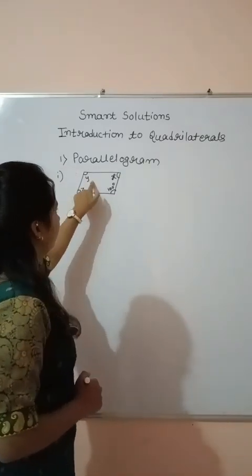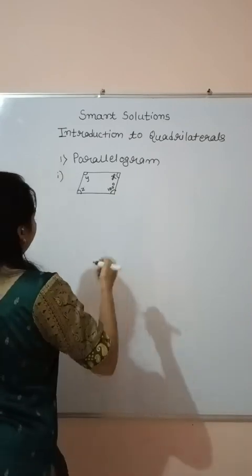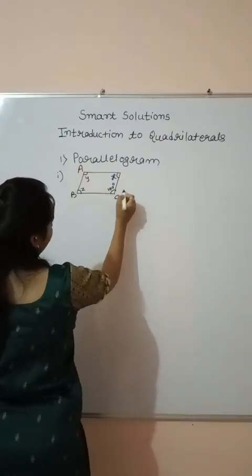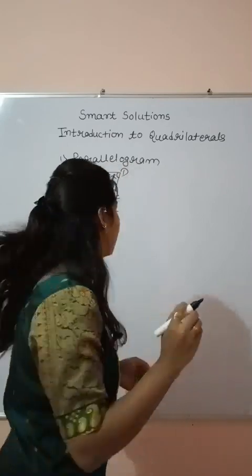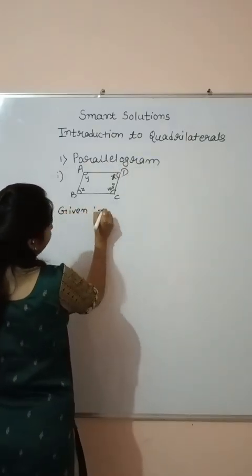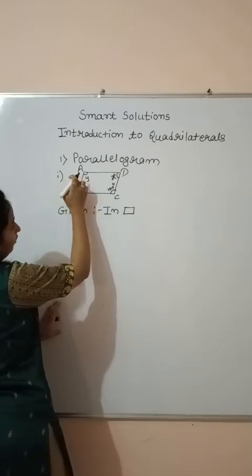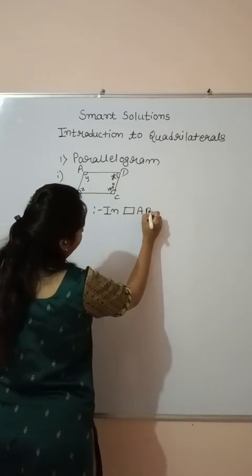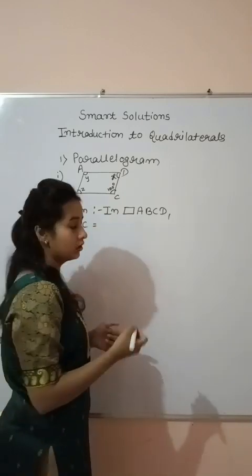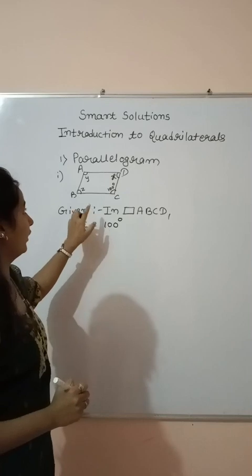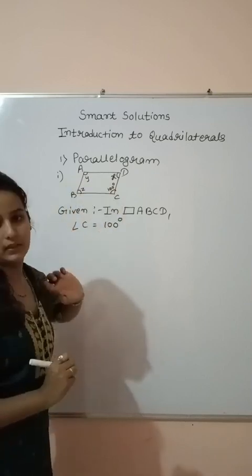Now here is an example in which you have to find the values of X, Y, and Z. We will give the name to this diagram A, B, C, D. First, before solving the example, you have to write the given things. So what is given in this example? This is the parallelogram ABCD. Angle C is equal to 100 degrees. And you have to find out angle A, angle B, and angle D — that is, Y, Z, and X.